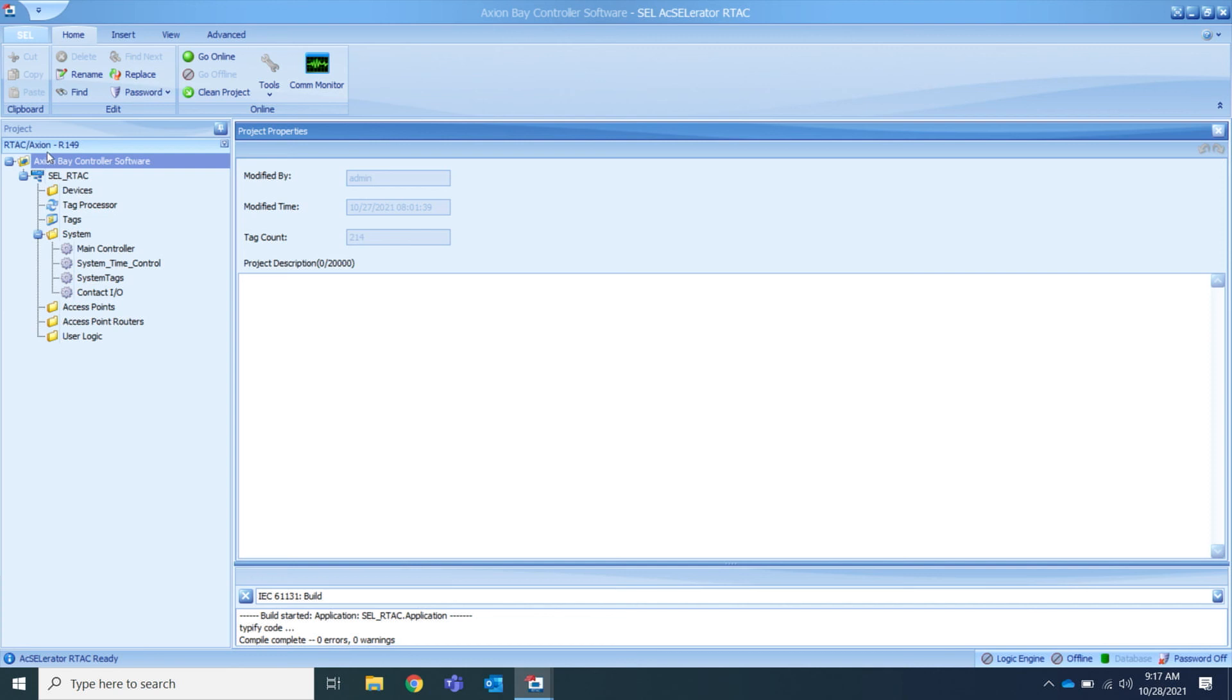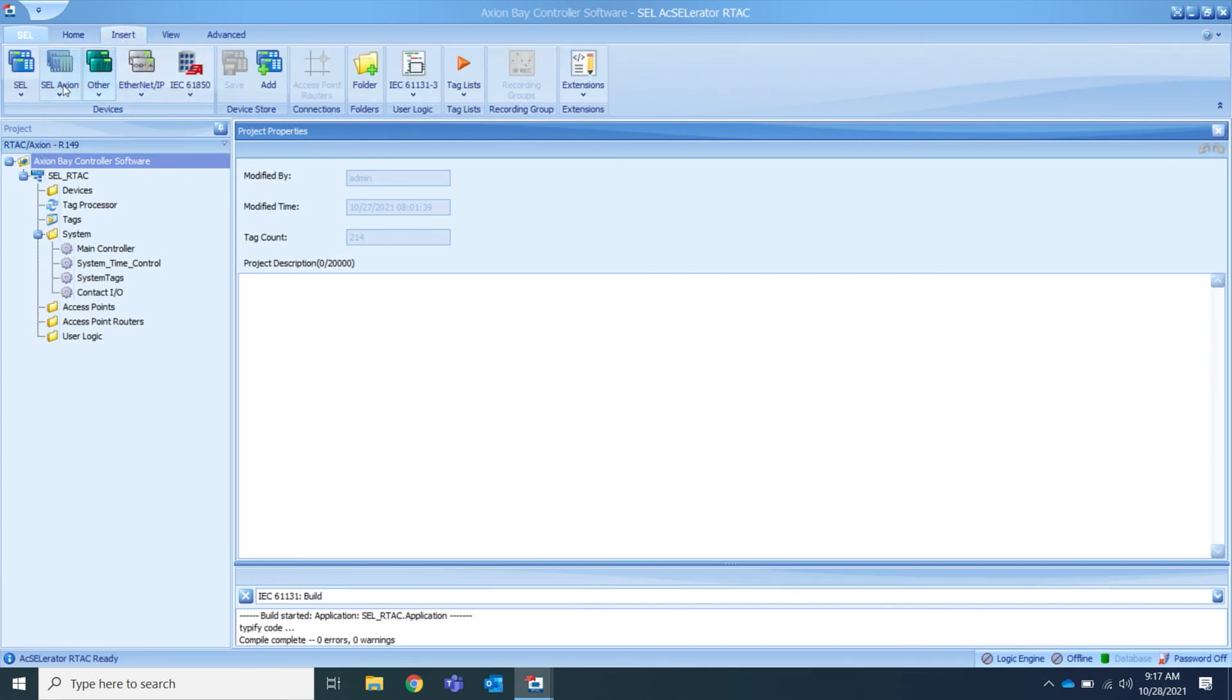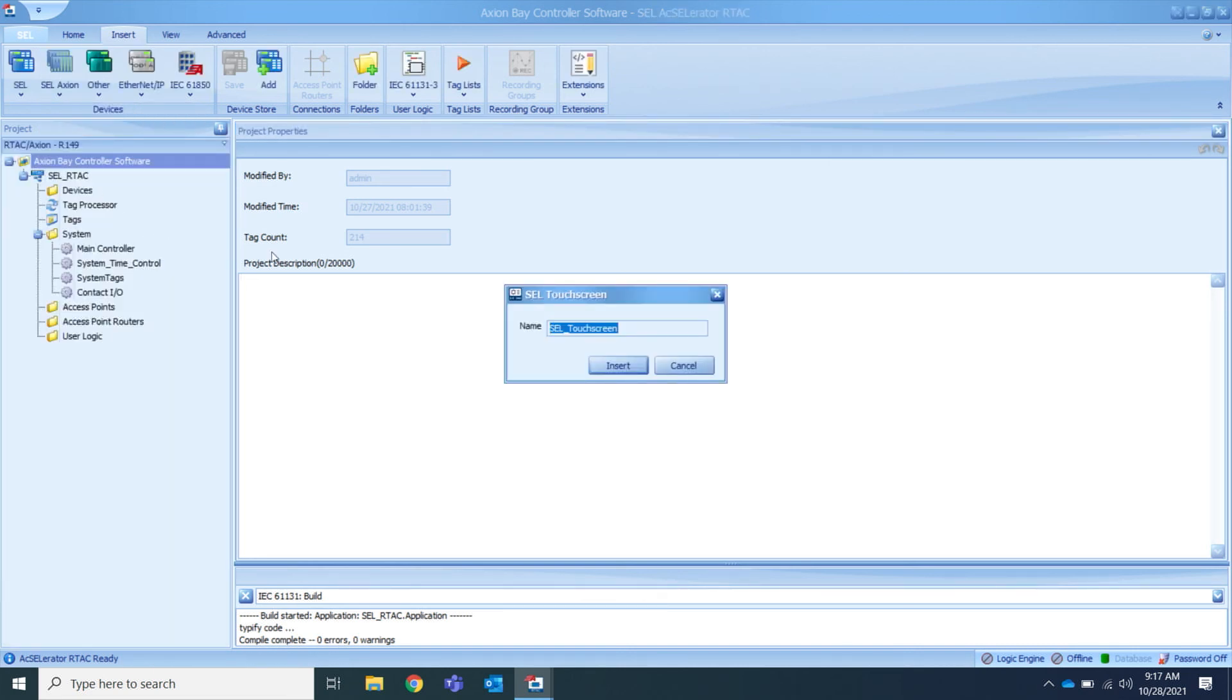This will require an R-TAC slash Axion project type with R149 firmware version or later. The first step we need to perform is insert an SEL touchscreen device into our project. To do this, select the Insert tab, SEL Axion, and then the SEL touchscreen. Press the Insert button to add this to your device.